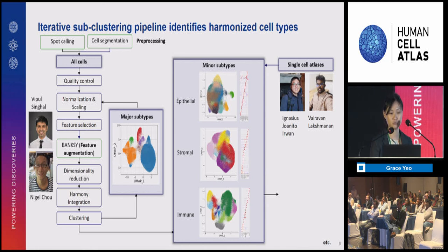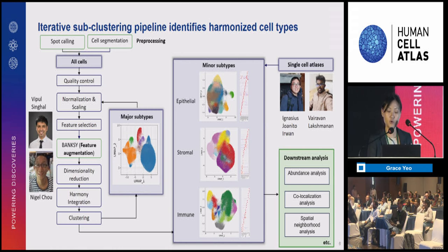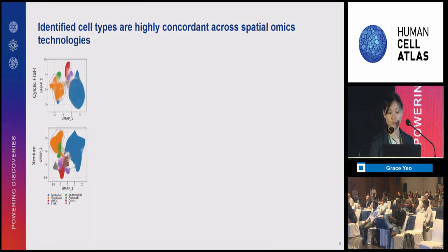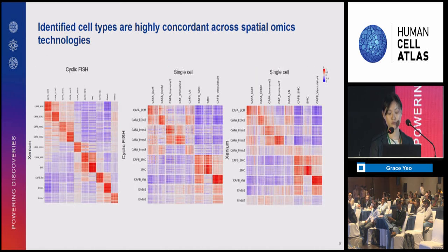We also include spatial information into our cell typing pipeline through Banksy, which was developed by Vipo and Nigel and recently accepted. In downstream analysis, we go beyond simple abundance analysis to spatial-specific analyses such as co-localization and the discovery of neo-spatial neighborhoods. When we applied this pipeline, we identified all major cell types expected in CRC, and when we sub-clustered, for example fibroblasts, we identified fibroblast subtypes within our spatial data expressing distinct markers with probably distinct functions.